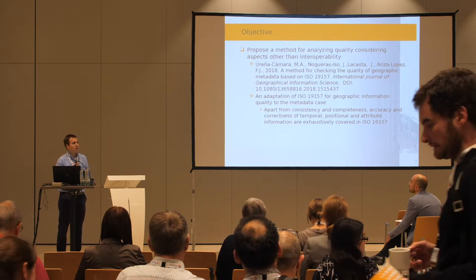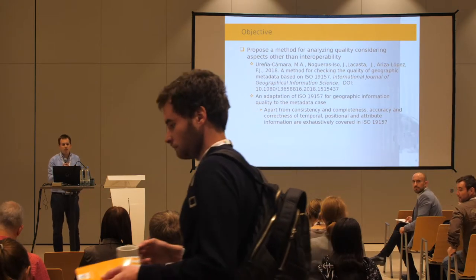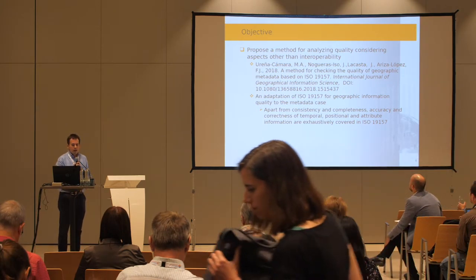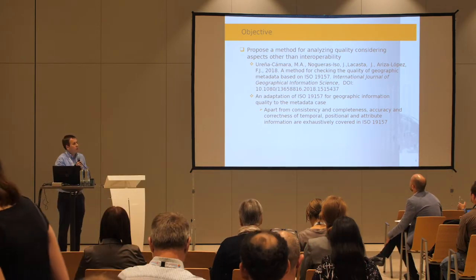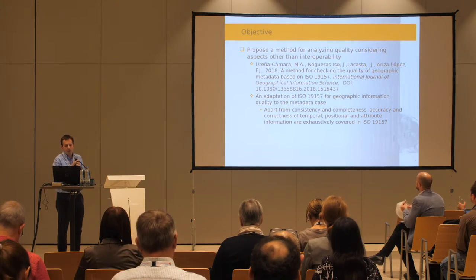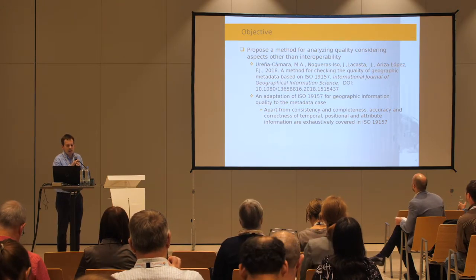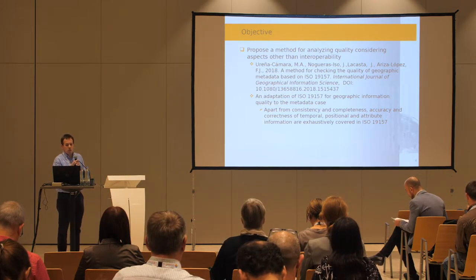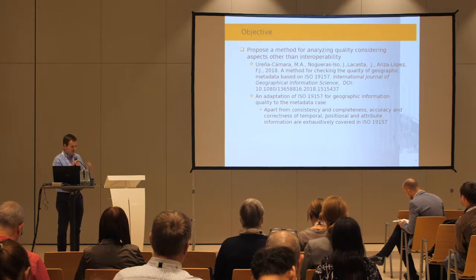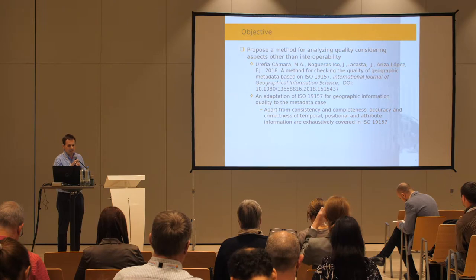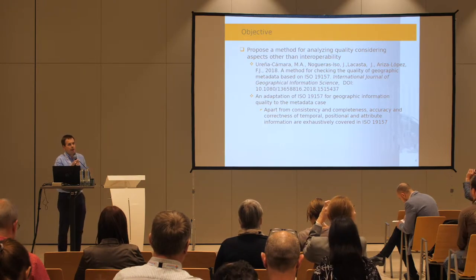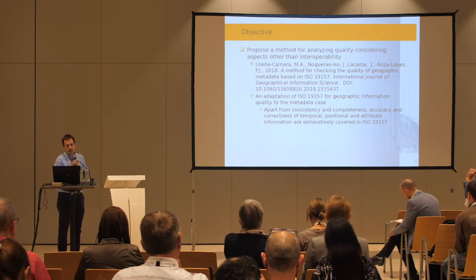What we have proposed is a method for analyzing quality considering aspects other than interoperability. At the beginning of this week, we published a paper in the International Journal of Geographical Information Science, which is a method based on ISO 19157.